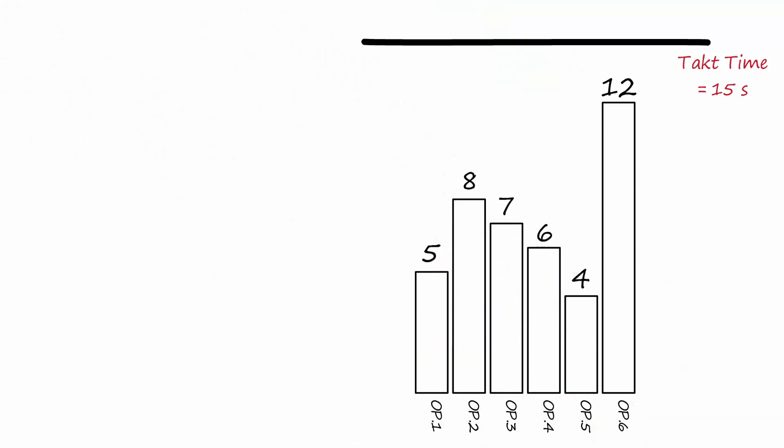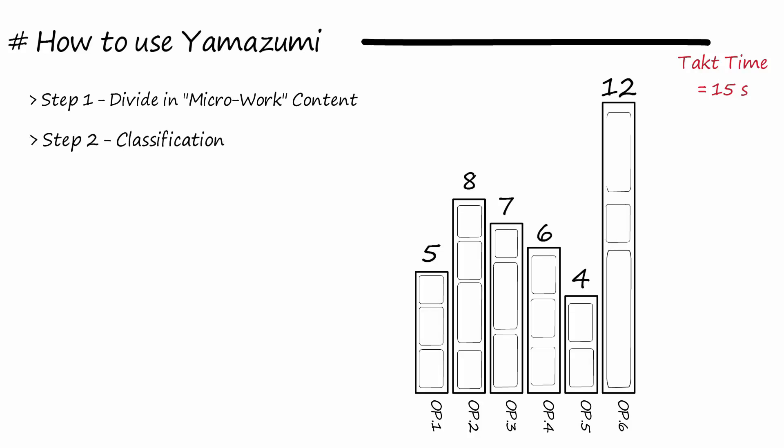How to use Yamazumi chart? Step 1: Divide each process in micro work contents. Step 2: For each micro work content, you have to ask yourself, is it value added? Does it change the product?